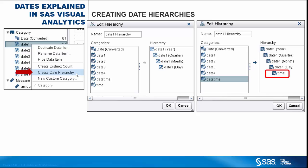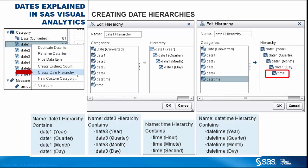To create a time hierarchy, you would right-click on a time data item and select Create Time Hierarchy. The time data item results in a hierarchy of hour, minute, and second. The hierarchies shown here would be the default hierarchies created for the Date 1, Date 3, Time, and Date Time data items.